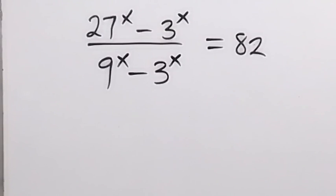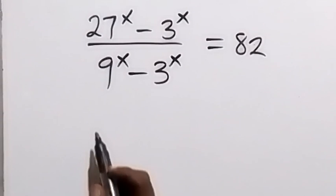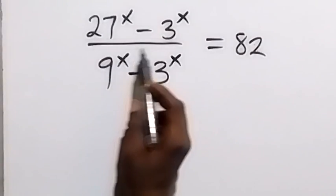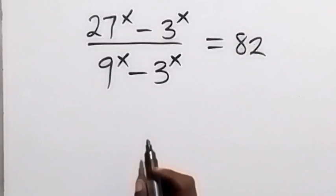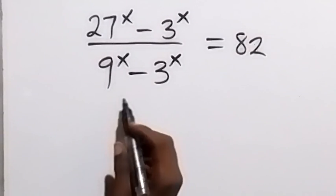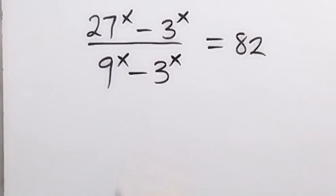Hello, you are welcome. How to solve this problem? 27 raised to the power x minus 3 raised to the power x, divided by 9 raised to the power x minus 3 raised to the power x, equals 82.